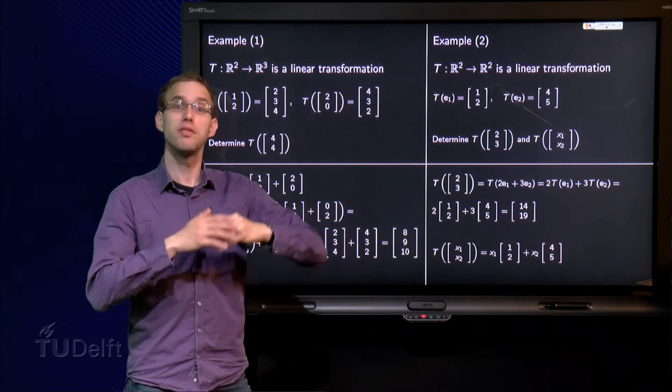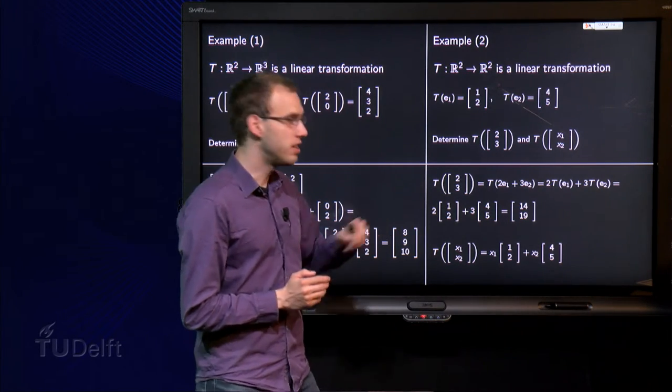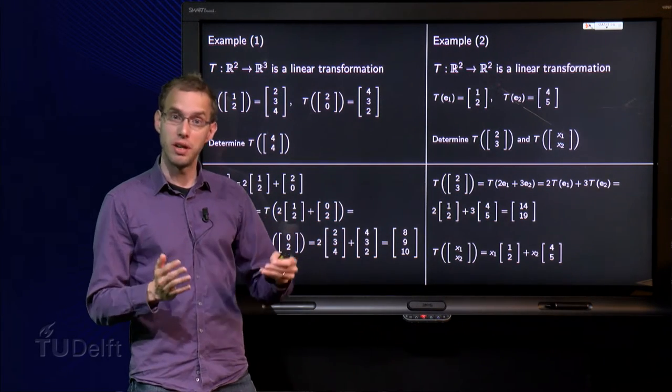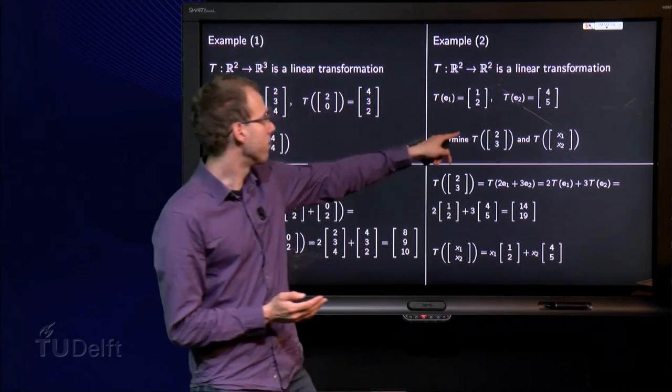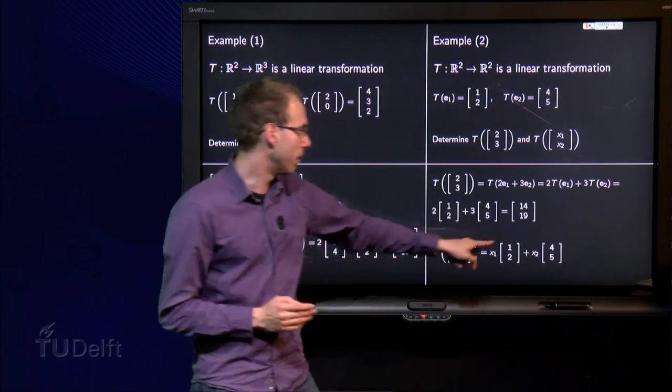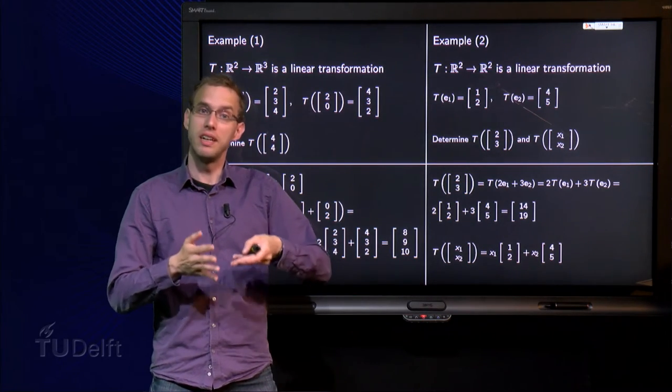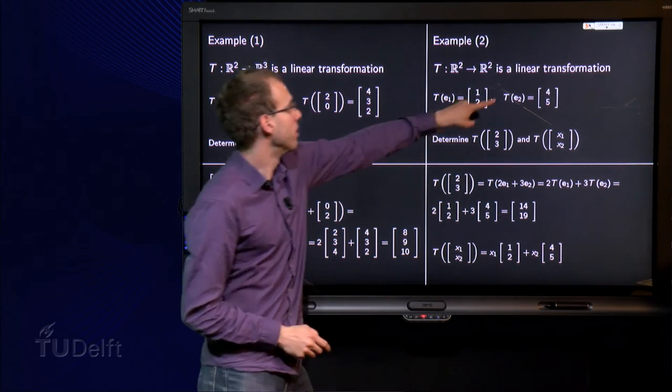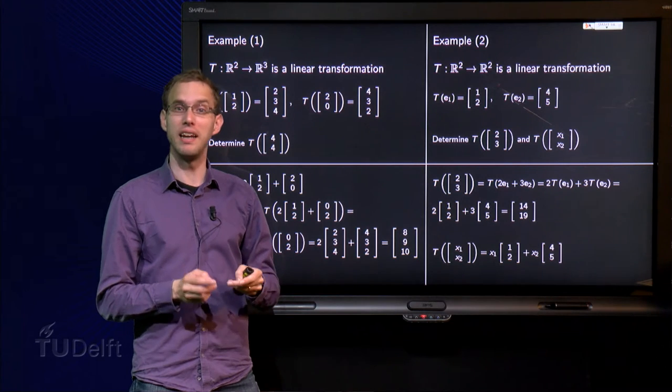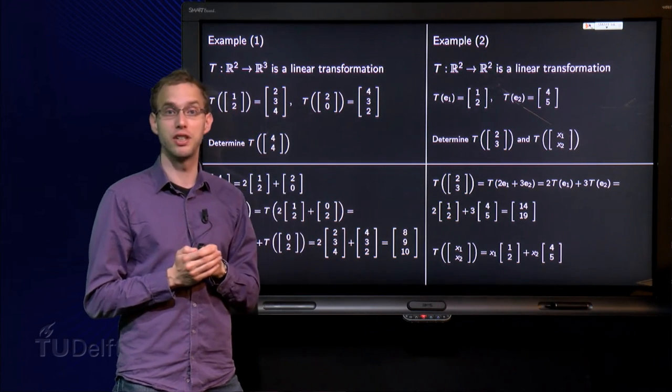Can we find the image of any original (x1,x2)? Well, let's see. The T of (x1,x2) goes the same way. It yields x1 times the T of E1 equals (1,2) plus x2 times the T of E2 equals (4,5). And then, if you give any original, you can find any image. So, in this case, it suffices to specify only two points to fully specify the linear transformation.